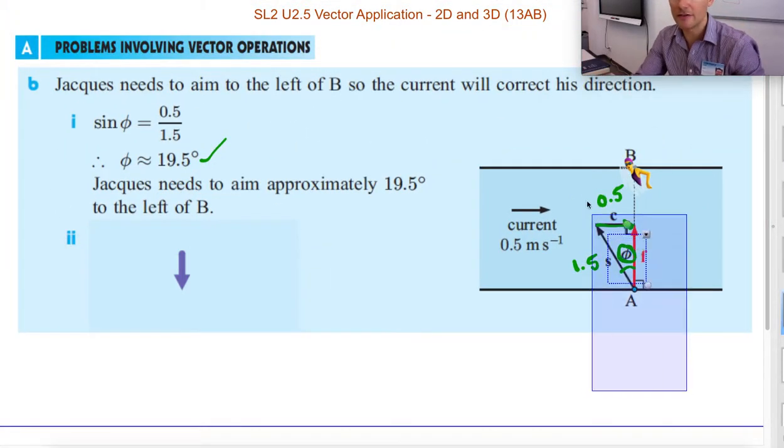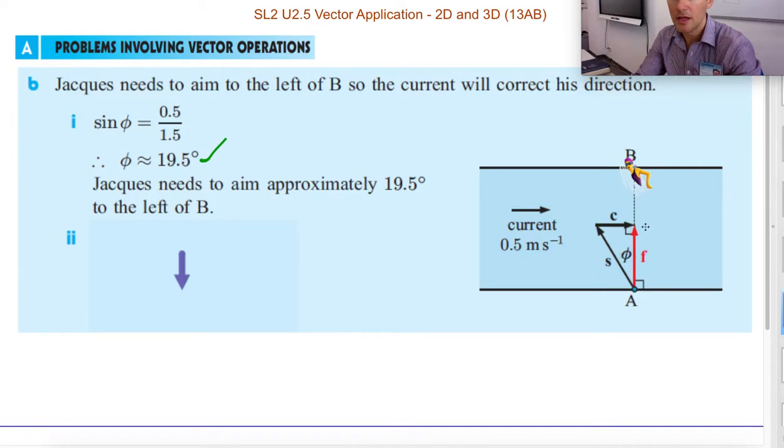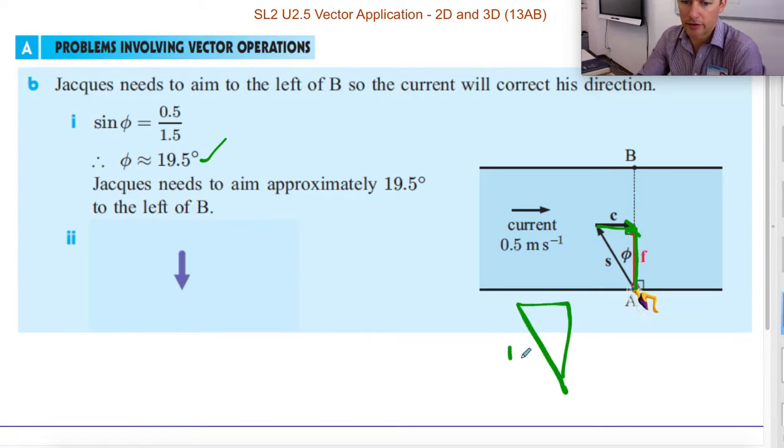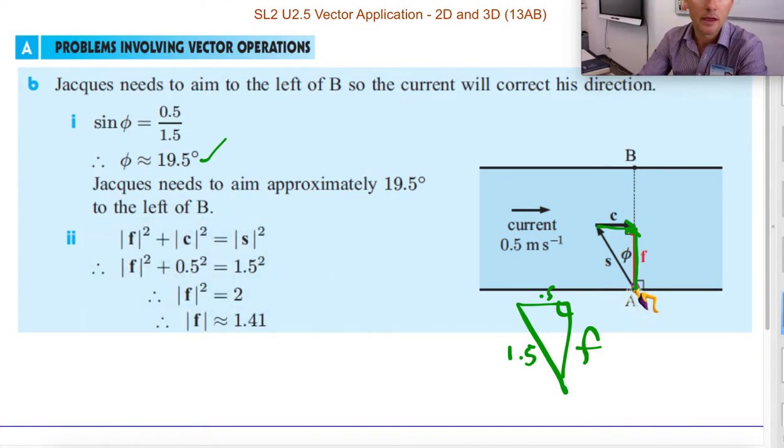So what's the velocity? Because you're swimming somewhat upstream, some of your speed, some of your velocity is burned off countering this current. Well, we can find that velocity. It's just this length of this vector. And it's still just a right triangle. And we know this is 1.5, the hypotenuse, and this is 0.5, and this is f. It's a right triangle. So you can turn it back into Pythagorean theorem. This is just a² + b² = c².